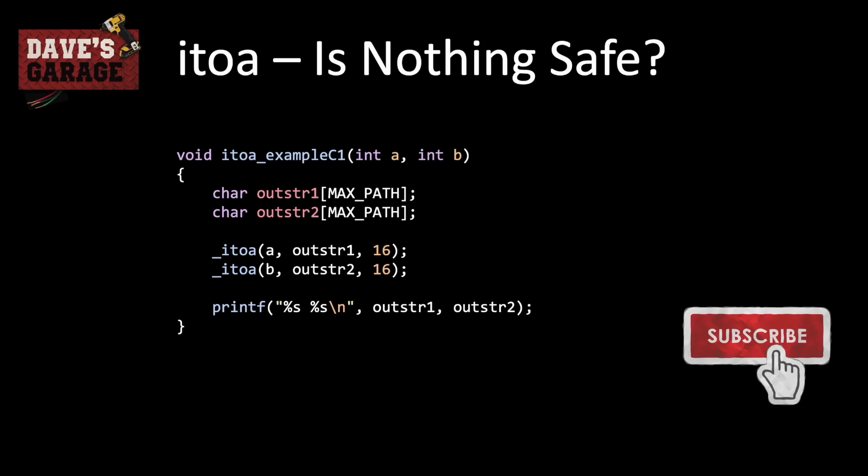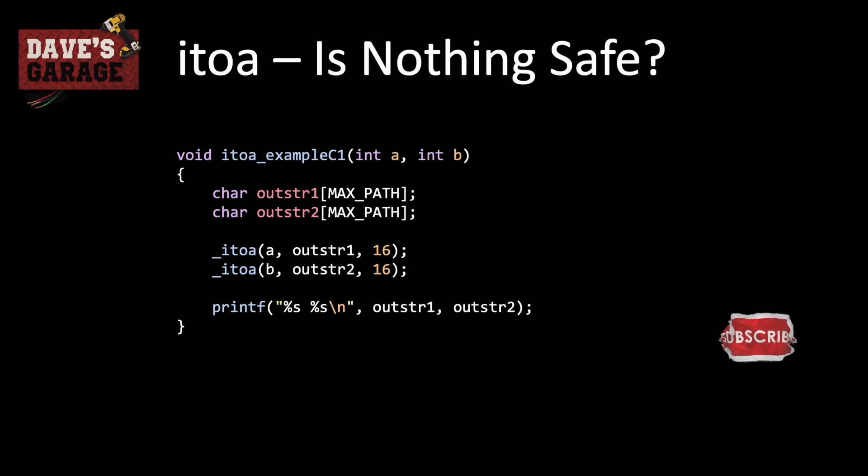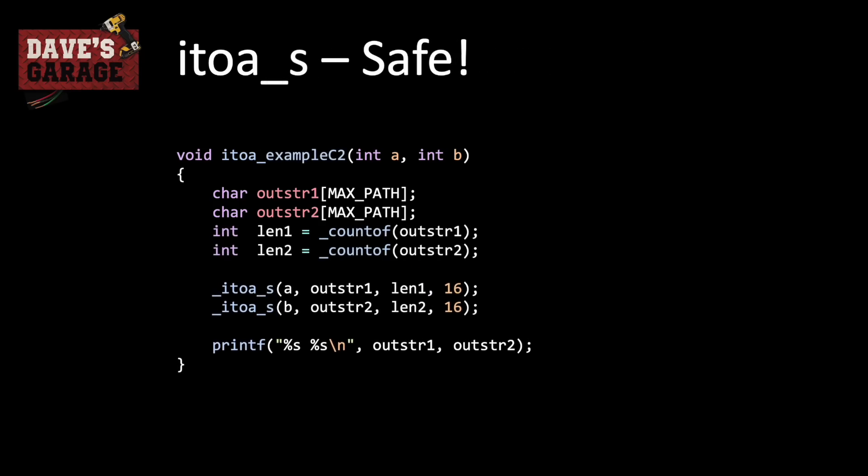itoa — could it get much simpler? And yet it's still not safe. In this case we pass in two integers and declare two output buffers, then print them with a space in between. This will actually work because we've declared outrageously large buffers of 260 characters instead of the small amount actually needed. But your two options are to declare really large wasteful buffers or run the risk of trashing memory. The fix is itoa_s.